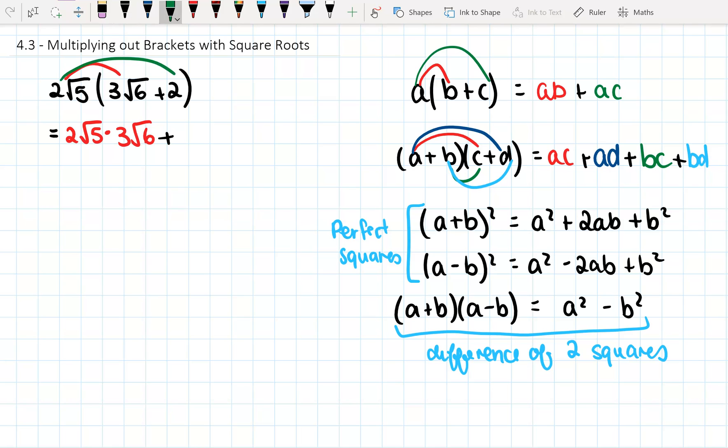Plus, we do the other one. We get 2√5 times 2. Alright, remember that's 2 times 3 and then √5 times 6. Okay, and then plus, alright, 2 times 2 is 4, so 4√5.